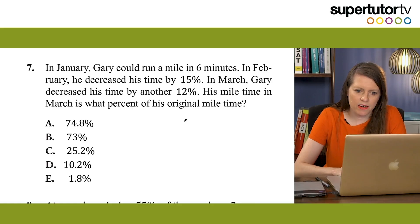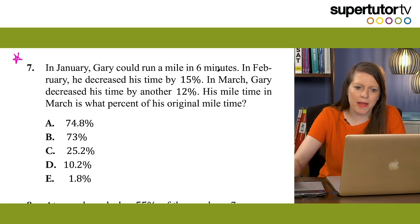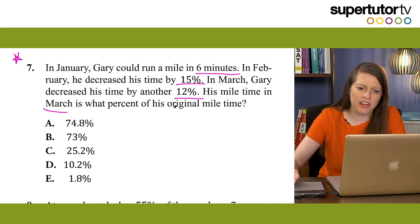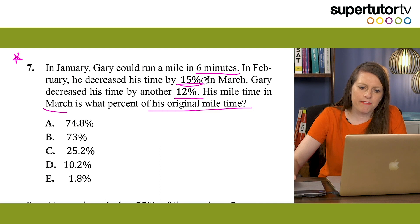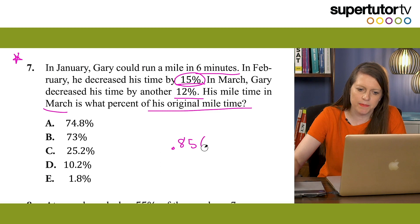The last tip is the percent shortcut — something a lot of you might not know. I'm often surprised at how many students do percents the slow way. Let's do number 7 from the problem set in Book 2, page 51: In January, Gary could run a mile in 6 minutes. In February he decreased his time by 15%. In March he decreased by another 12%. His mile time in March is what percent of his original mile time?